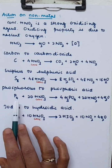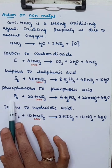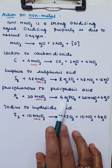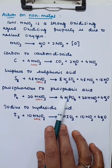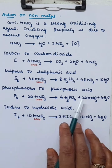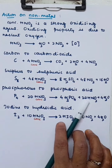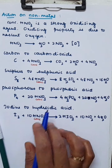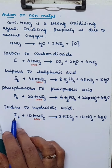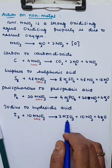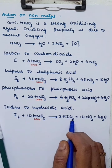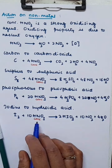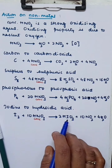Similarly, phosphorus in its most stable elemental state (P4) is oxidized by concentrated HNO3 to phosphoric acid (H3PO4) with nitrogen dioxide formed. Iodine is also oxidized by concentrated HNO3 — the oxidation number of iodine goes from zero to plus five, forming iodic acid (HIO3).